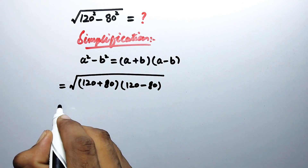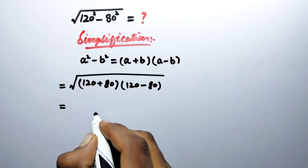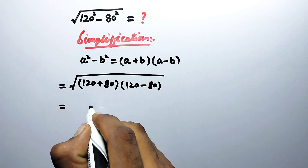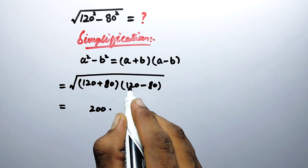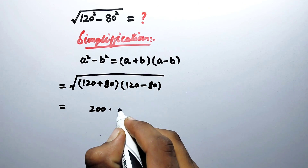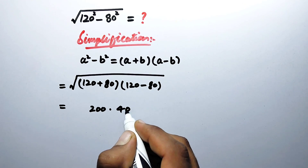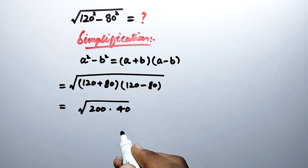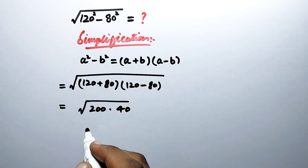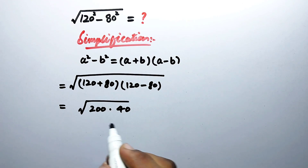So it will be equal to 120 plus 80, which is 200, times 120 minus 80, which is 40, all under the root. And here we can simplify this term further.